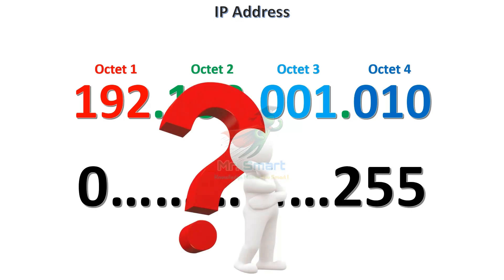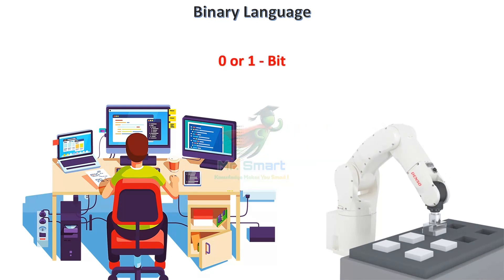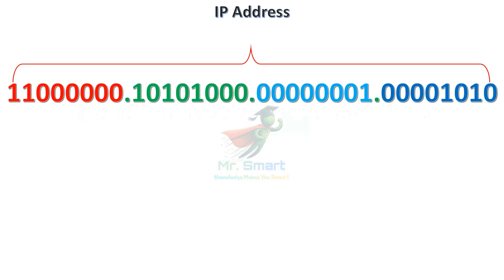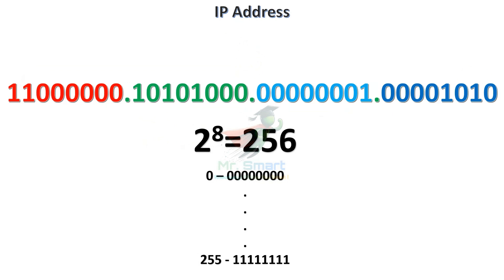But why is the range only 0 to 255? A computer, or any machine, understands only binary language, which is either 0 or 1, technically called bits. An IP address is also binary in its original form. It is made up of 32 bits, divided into 4 parts, with each part having 8 bits. That's why each part is called an octet. Mathematically, an octet can have 256 different binary combinations, ranging from 0 to 255. This is the reason why each part of an IP address has values from 0 to 255.